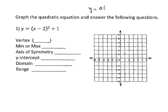If you have a quadratic equation in vertex form, remember that whenever you have a minus sign on the inside, it's saying it's going to be moving right. If you have a plus sign on the inside, it's going to be moving left. On the outside of the parentheses, a plus sign means moving up, and a negative sign means moving down.